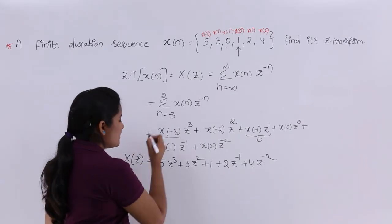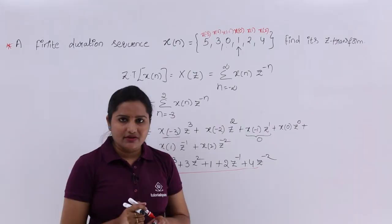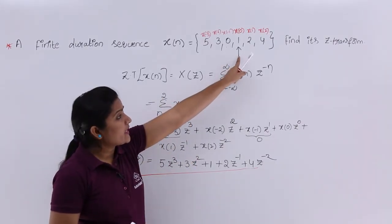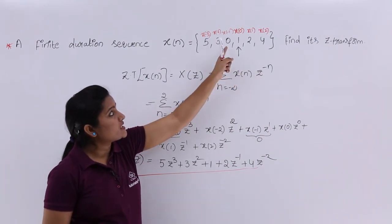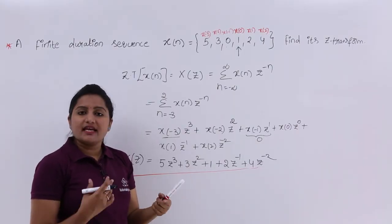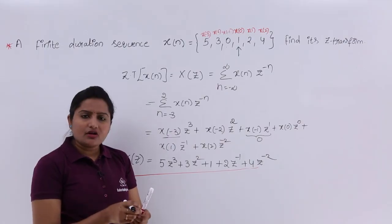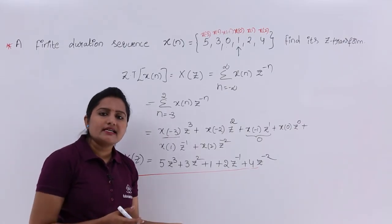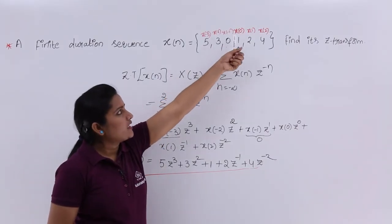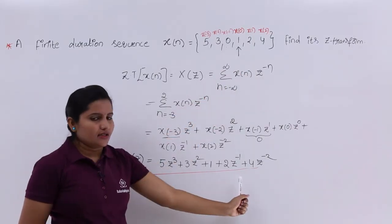So X of Z for this sequence is: 5Z³ + 3Z² + 1 + 2Z⁻¹ + 4Z⁻². This is how we write the Z-transform of the given sequence. Note that this sequence is not balanced — to the right of X of 0 there are 2 samples, but to the left there are 3 samples. For a balanced sequence, the number of samples on both sides of X of 0 must be equal.